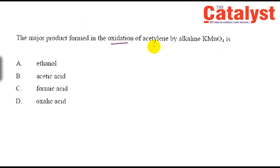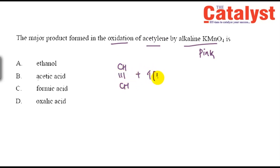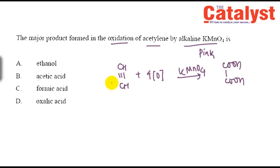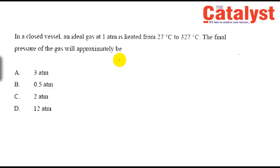The next question is about oxidation of acetylene by alkaline KMnO4. KMnO4 is pink in color, and acetylene decolorizes it. When acetylene (CH≡CH) reacts with alkaline KMnO4, it is oxidized to oxalic acid. This discharges the pink color and is also a confirmatory test for acetylene. The answer is D: oxalic acid.